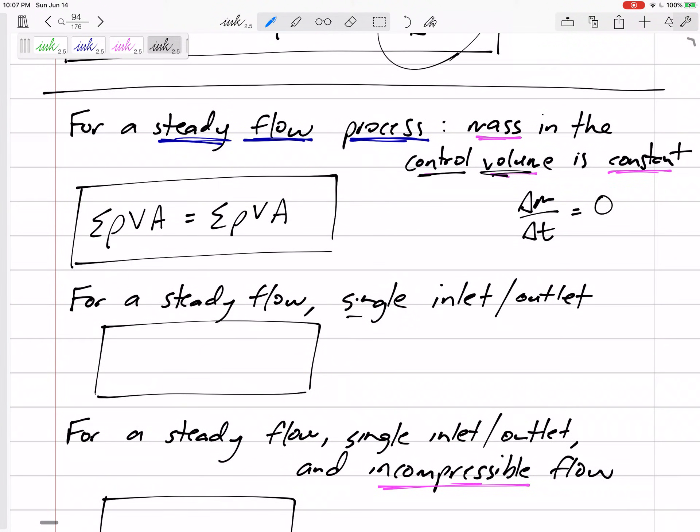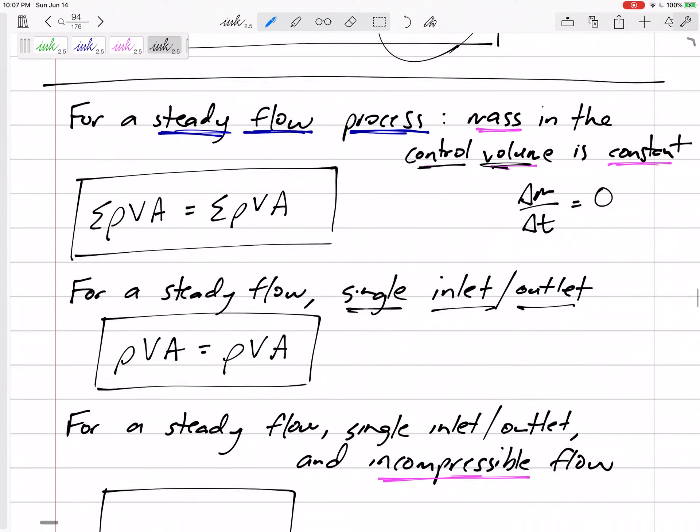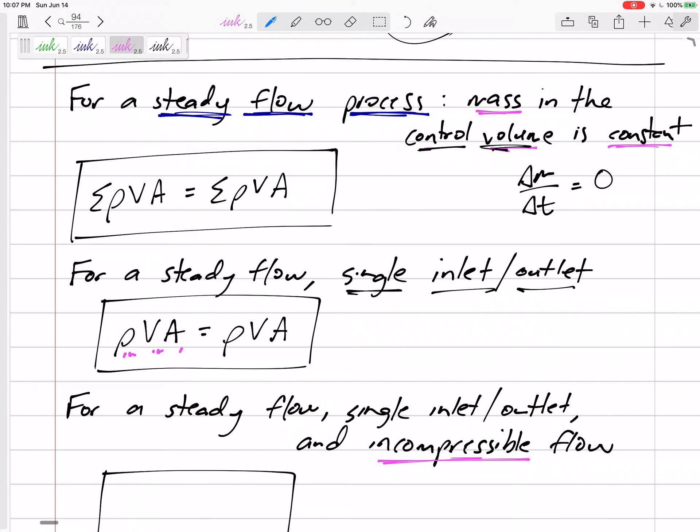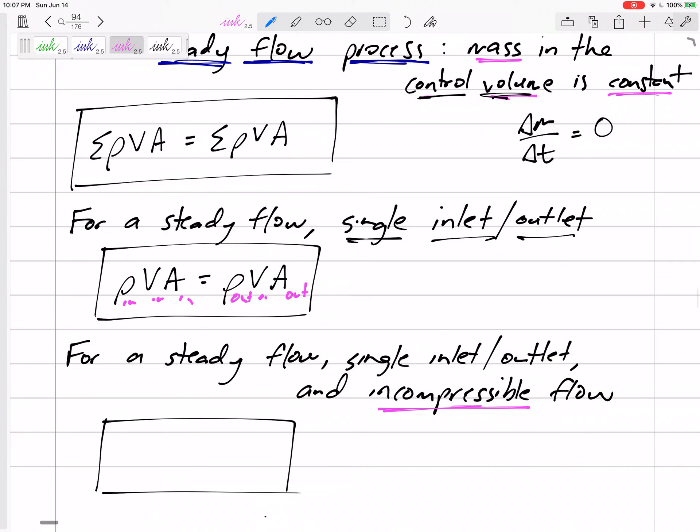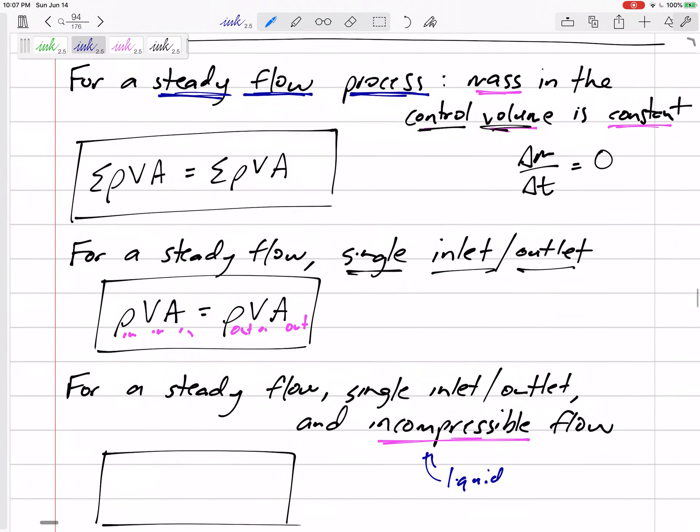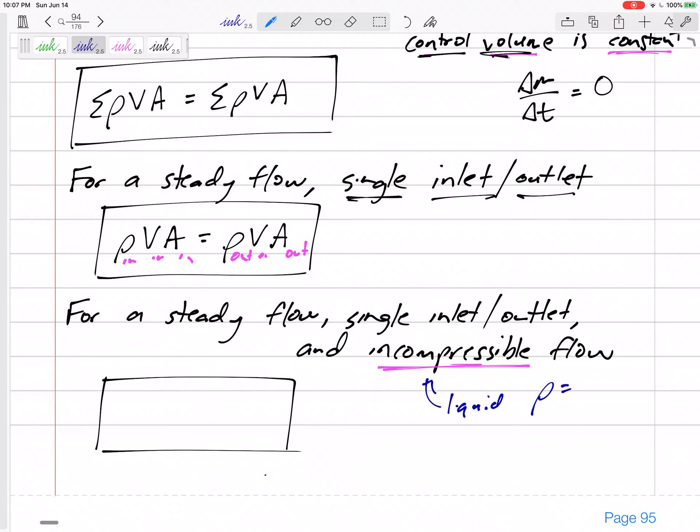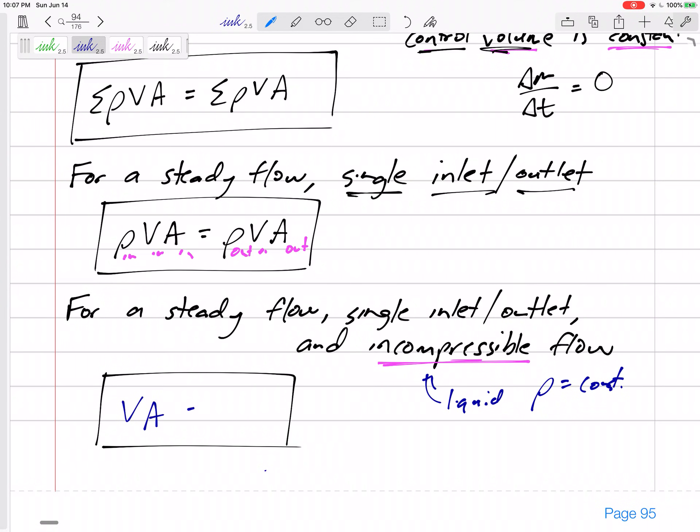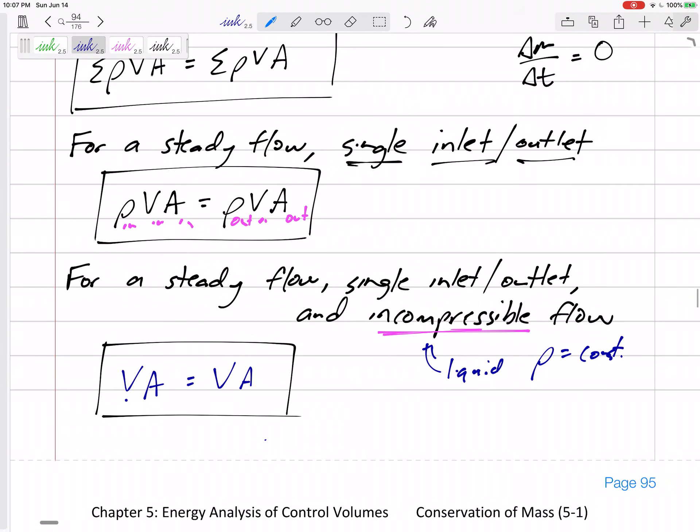If there's a single inlet outlet, then there's no summation. It's just rho VA inlet and rho VA outlet. Now, how about steady flow, single inlet outlet and incompressible fluid? Incompressible, like a liquid, not a gas. But if it's a liquid, and if we can assume that the rho is constant, then the VA of the inlet equals the VA of the outlet.